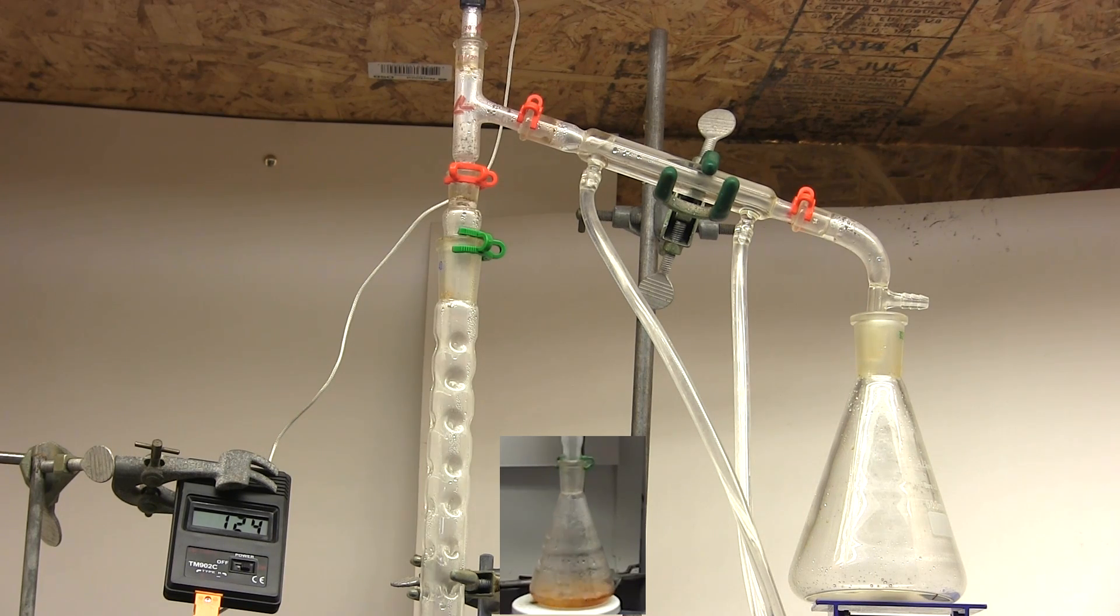I prefer these vigrex columns as opposed to packed columns as the greater open space allows the condensate to easily return to the flask. So it's much harder to flood this column even at high flow. That being said it's still possible so pay attention to your distillation.